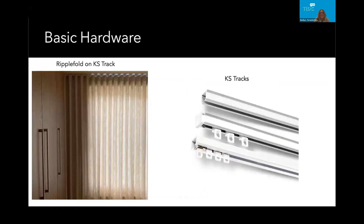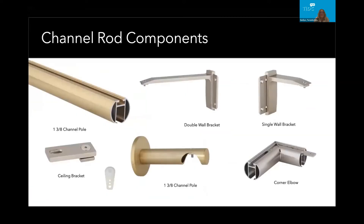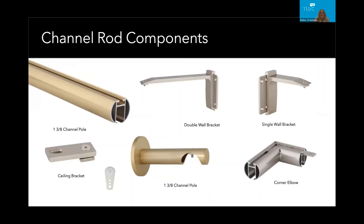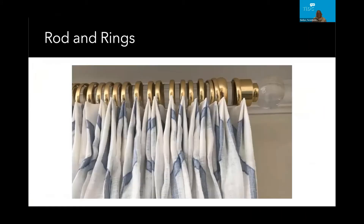A question from Deborah: does the drapery turn the corner with the corner rods, or is it just for visual continuity of the rod? The drapery doesn't turn the corner — there's a single runner at the angle side, which hooks up to provide some darkness, but the drapery stops right where the elbow starts. And from Tara: would the cutout in the double bracket work for a hotel application? Absolutely — they are very strong.